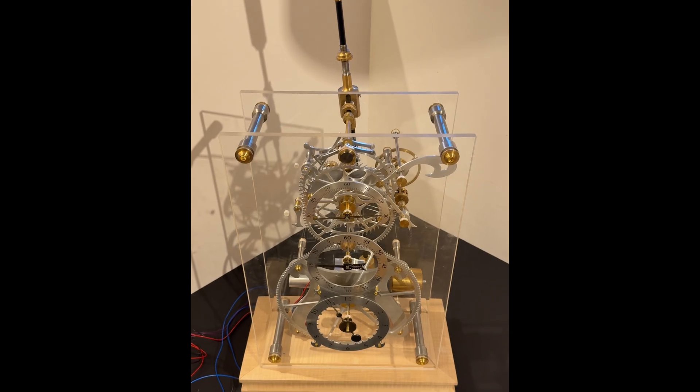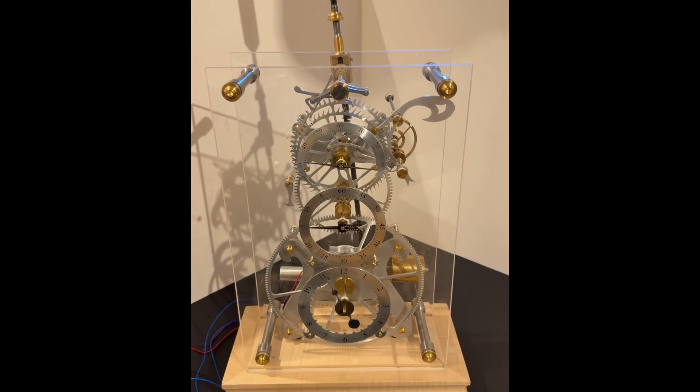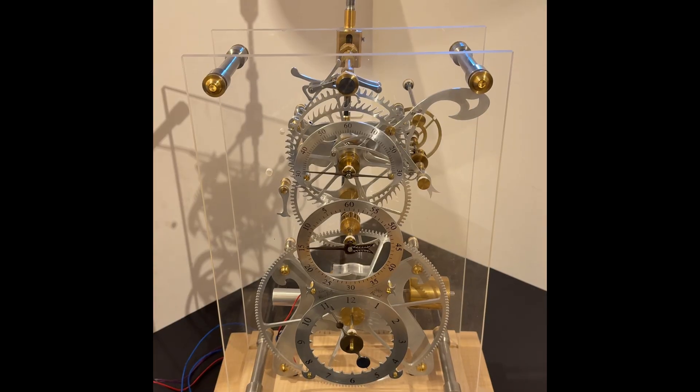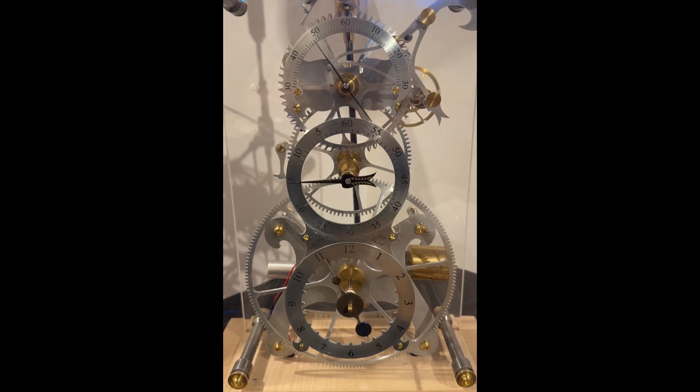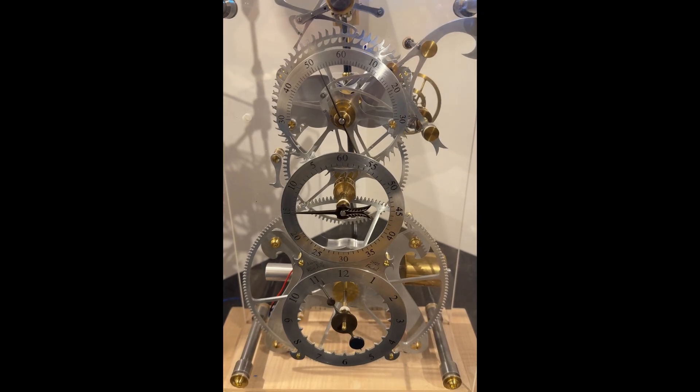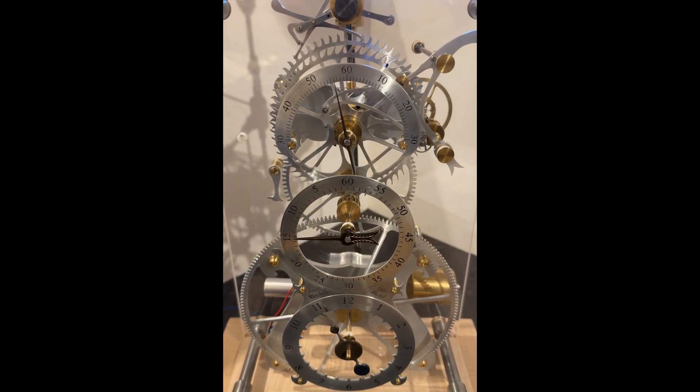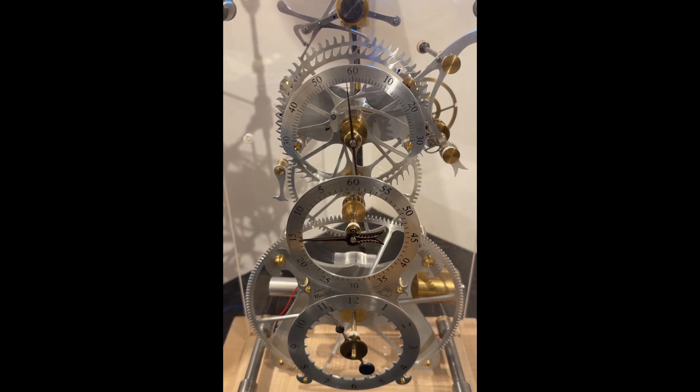You can see that we have a double-ended compound pendulum which enables a nice slow beating pendulum in a relatively small clock. This video shows the overall layout of the clock before I move on to showing you close-ups of the individual elements and how they actually function between each other.